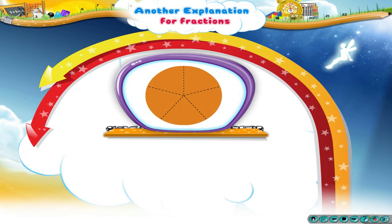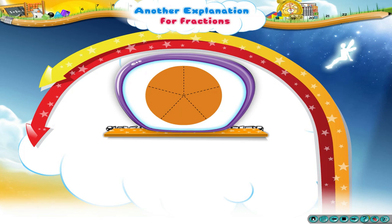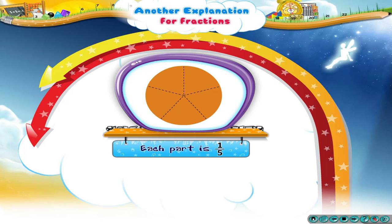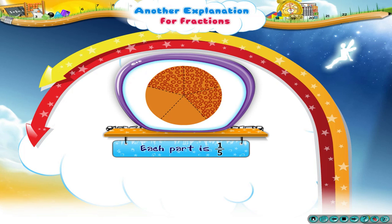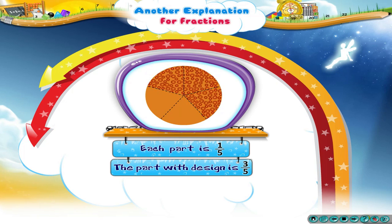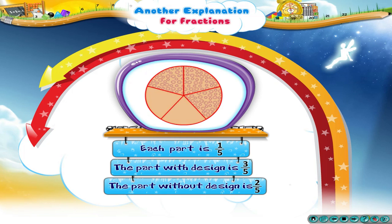Let us look at another example. Here, one whole is divided into 5 equal parts, so each part equals 1 upon 5. Here, 3 such parts is 3 upon 5. So the part with design is 3 upon 5 and the part without design is 2 upon 5.